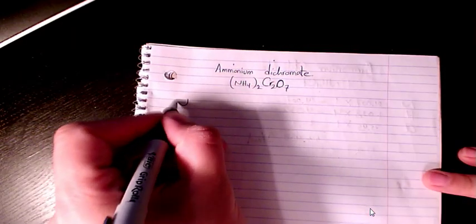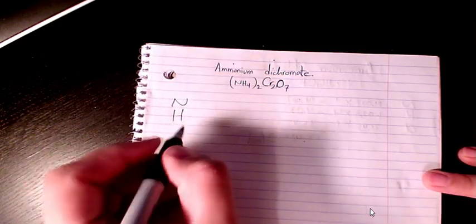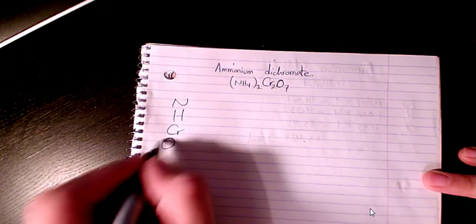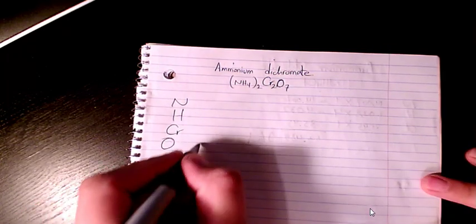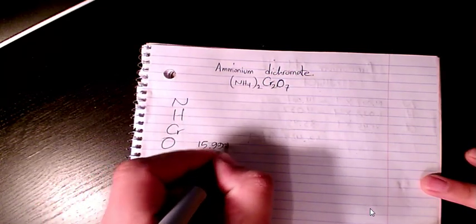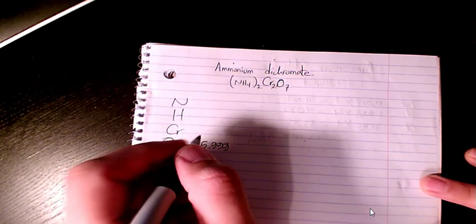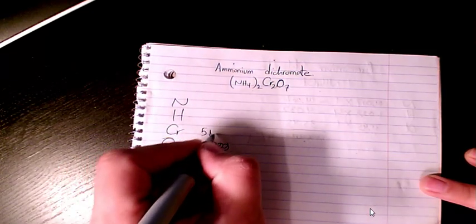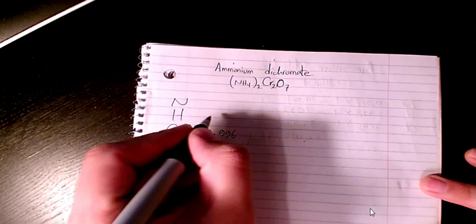find atomic mass of all these elements: nitrogen, hydrogen, chromium, and oxygen. Oxygen is 15.999, chromium is 51.996, hydrogen is 1.008, nitrogen is 14.007.